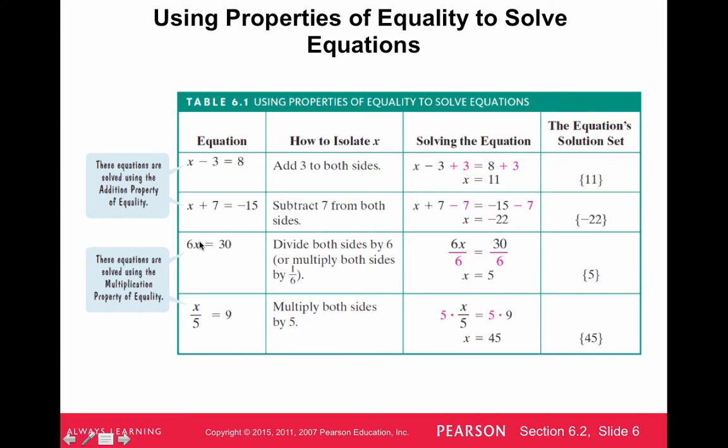If we have a variable times a number, or a number times a variable like this, then we can divide both sides by that number. If we have 6x equals 30, then we can divide both sides by 6, and that will cancel the times 6, so we'll just get x and isolate x. 30 divided by 6 is 5. So 6 times 5 is 30, that checks.